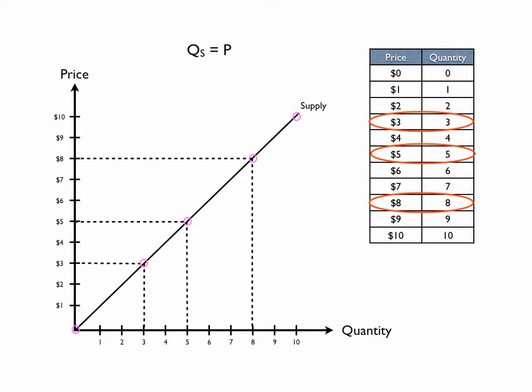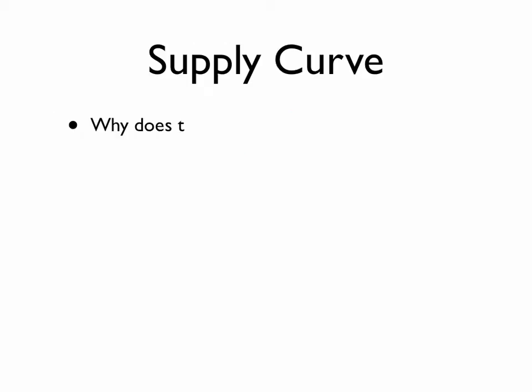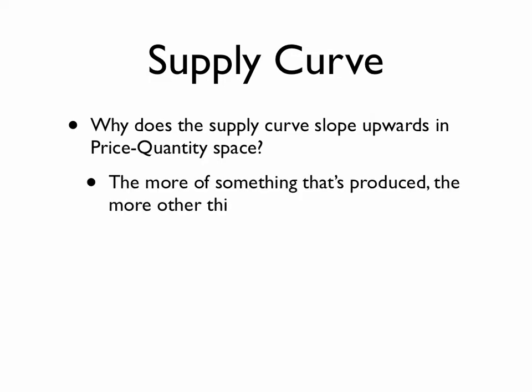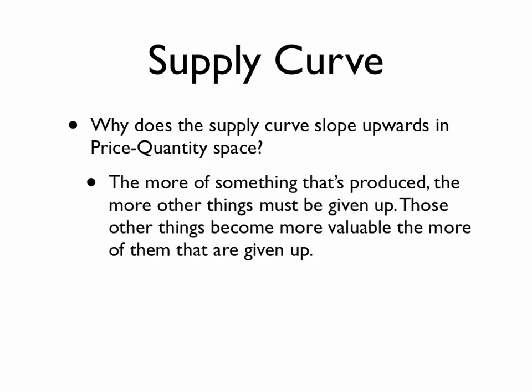The supply curve represents how much suppliers are willing to bring to the market at different prices. The question, of course, is why does the supply curve slope upwards in price-quantity space? The simple answer is the more of something that's produced, the more other things we must give up to have that new production, and those other things become increasingly more important to us the more we give up.